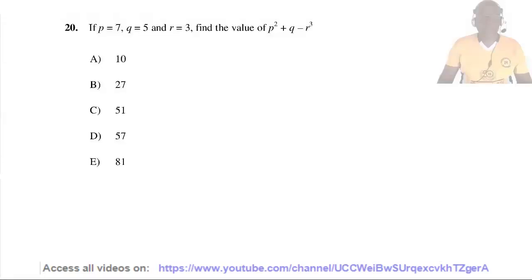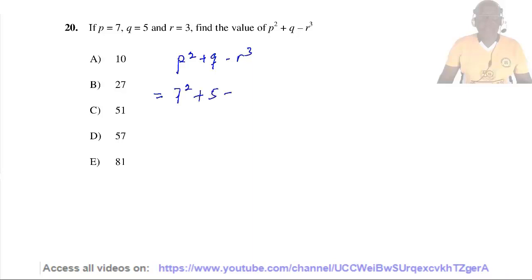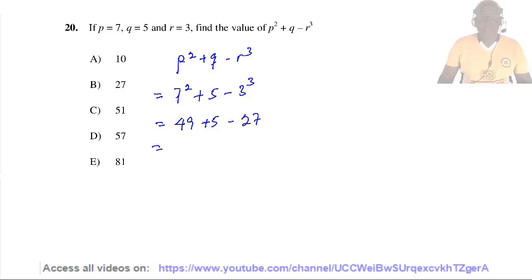Question 20: If P = 7, Q = 5, and R = 3, find the value of P² + Q − R³. Substituting: 7² + 5 − 3³ = 49 + 5 − 27 = 54 − 27 = 27. So the answer is B.